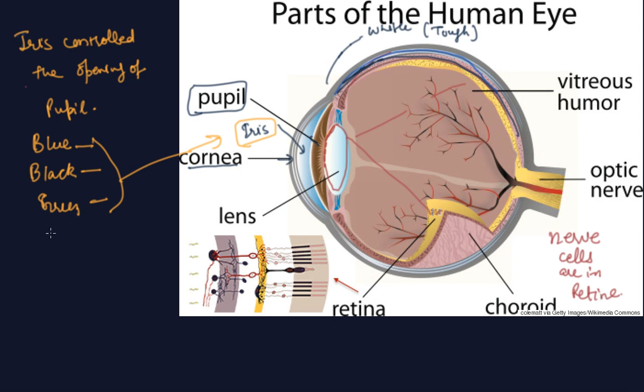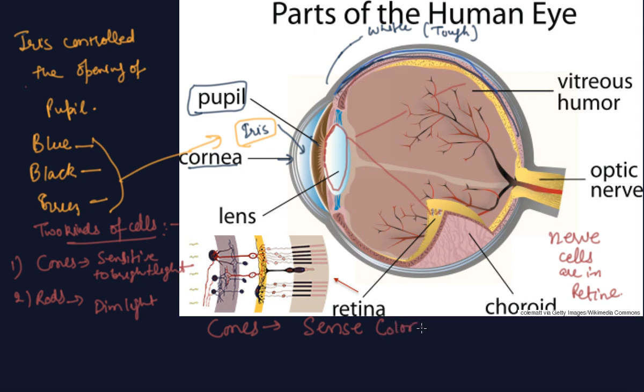There are two kinds of cells. First is cones, second is rods. Cones are sensitive to bright light, whereas rods are sensitive to dim light. This is the difference between rods and cones. Cones sense color, so any colored object is sensed by cones.